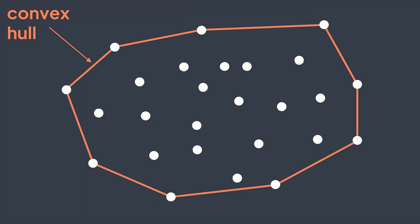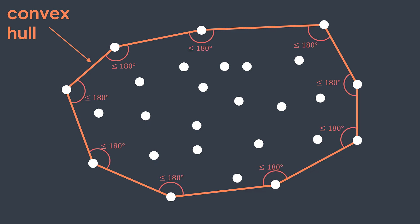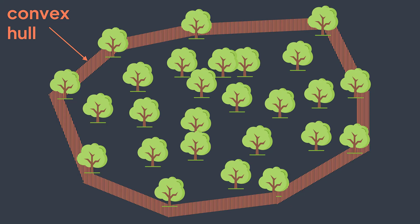The convex hull of a set of points is the smallest convex polygon that contains all the points. A convex polygon means that all interior angles are less than or equal to 180 degrees. In our example, points represent trees and the borders of our polygon represent fences.